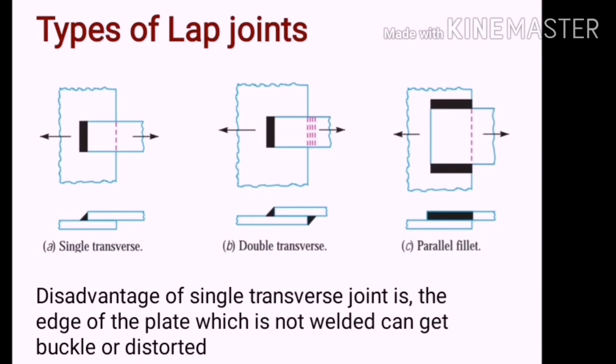Types of lap joint. Basically, there are 3 different types of lap joints. First is single transverse lap joint. Second double transverse and third parallel fillet type of lap joint. In single transverse lap joint, the load axis is in the direction perpendicular to the axis of the weld. It is as shown in figure number A.